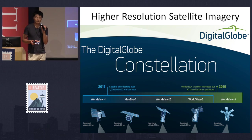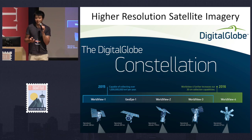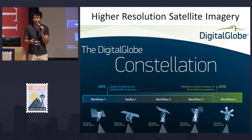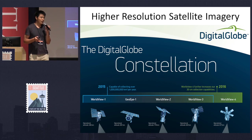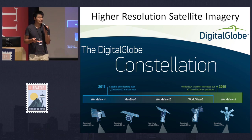Another thing that we are really excited about is higher resolution satellite imagery. The U.S. government lifted the ban on high resolution imagery for civilian use two years ago, and we are partnering with DigitalGlobe to use the highest resolution imagery possible and see how AI can use those images to help us in mapping.